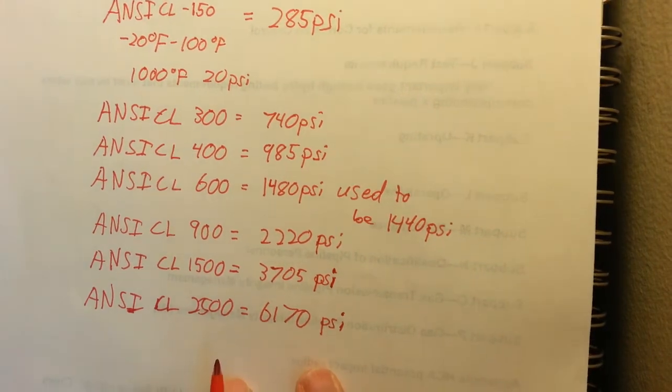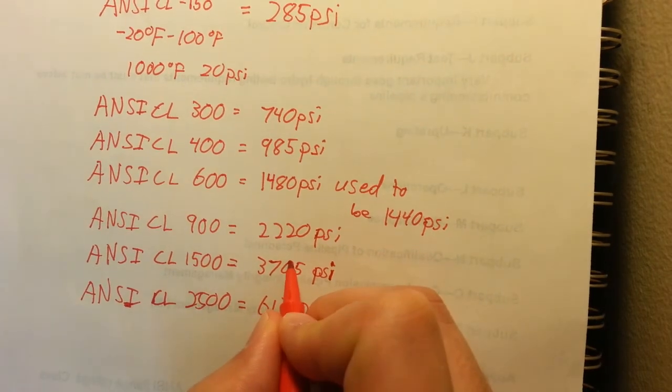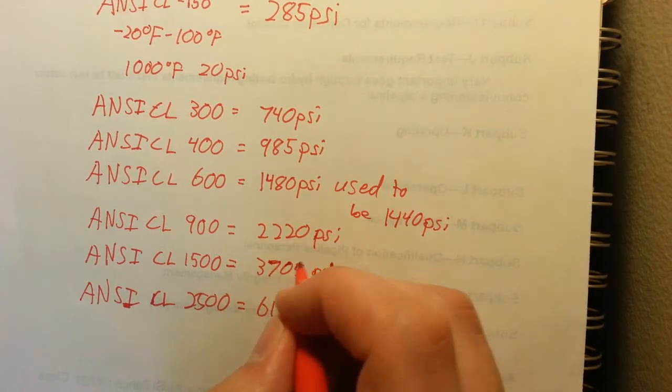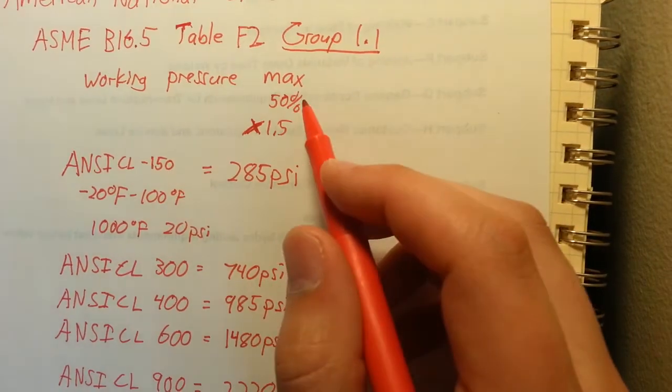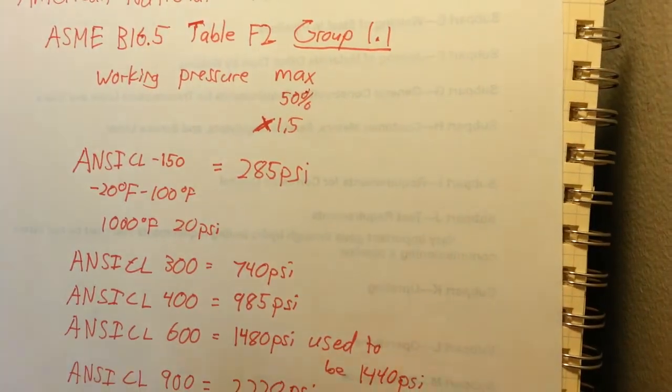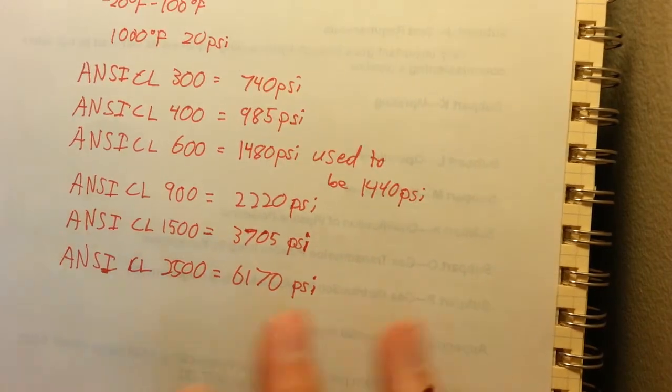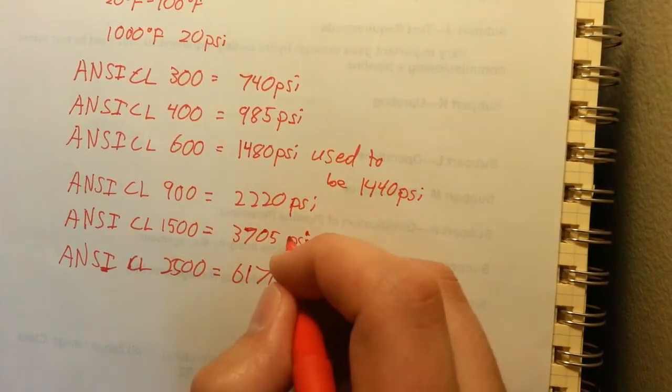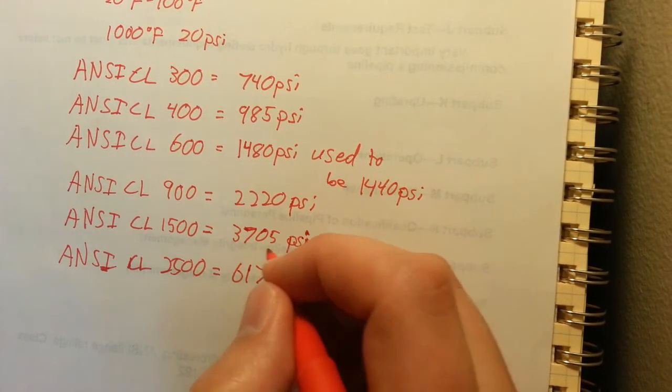So the thing with these working pressures is they still consider them the max operating pressure. Even though they can handle higher than that, they really don't want you operating the flanges that high unless it's for a hydrotest or something like that. So it's good to think of these as an MAOP pressure.